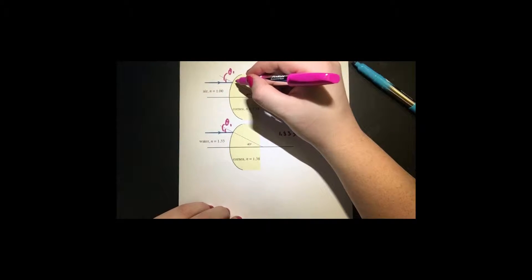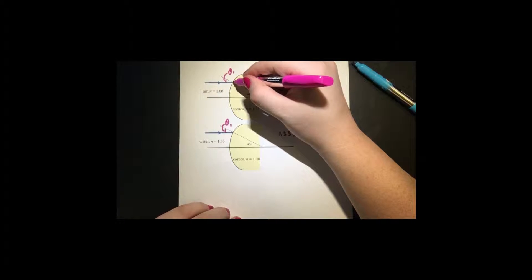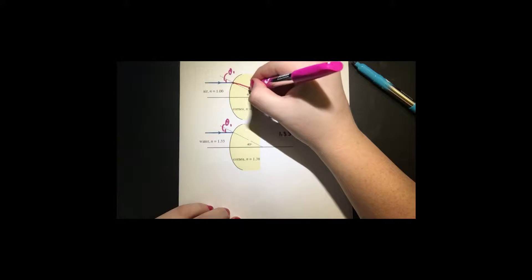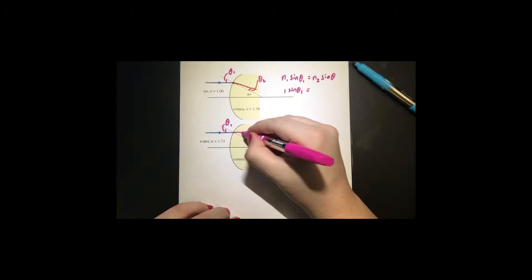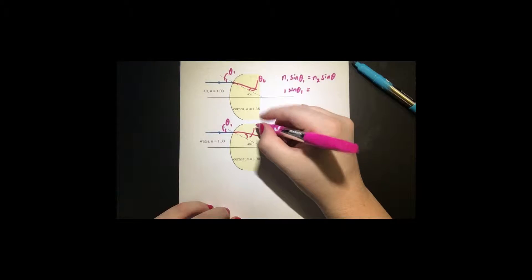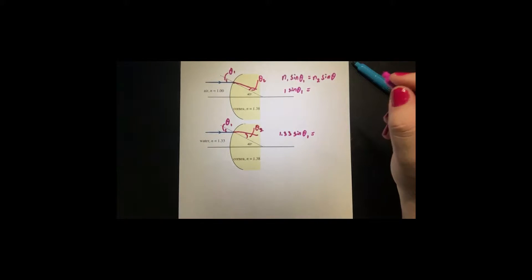And then so we have sine of theta 1 equals, this is 1.33, sine of theta 1 equals. Now we have here some angle where it bends where this is theta 2, theta 2 and this is also we'll call this theta 2.